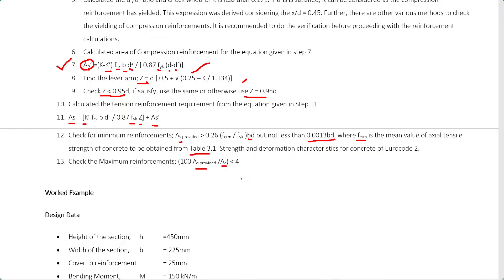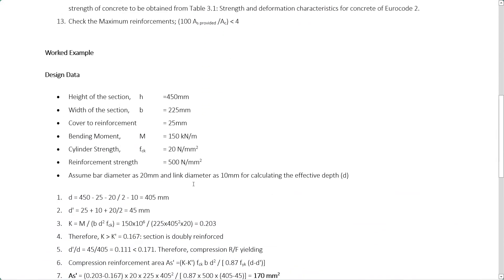As discussed, we now know the procedure for designing a doubly reinforced section according to the Eurocode. Let's work through a worked example to understand this further. Design data: beam height 450mm, width 225mm, cover to reinforcement 25mm, bending moment 150 kNm, cylinder strength of concrete 20 N/mm², and reinforcement strength 500 N/mm². Since we are not aware of the exact bar diameter before designing, we assume one based on the section size and experience.